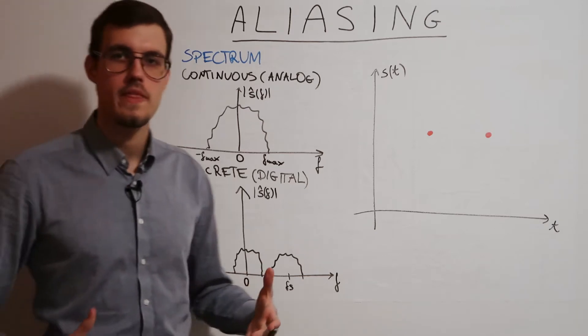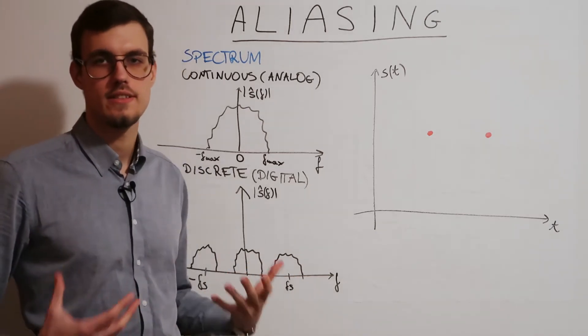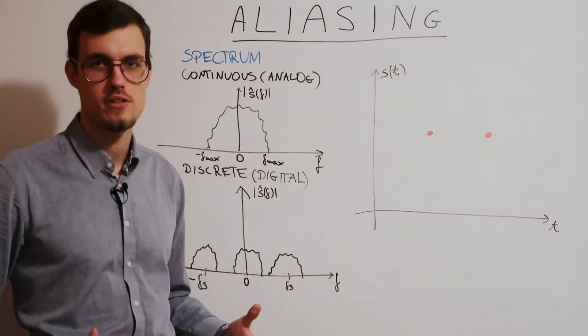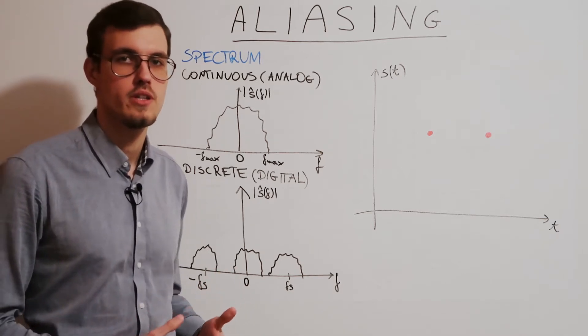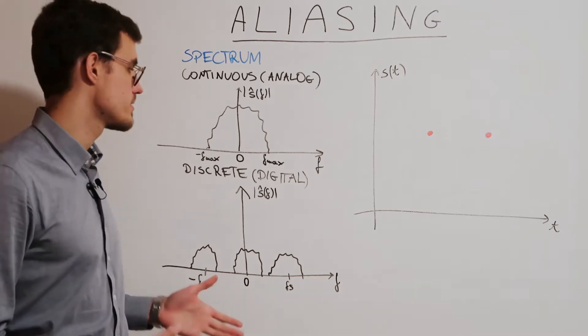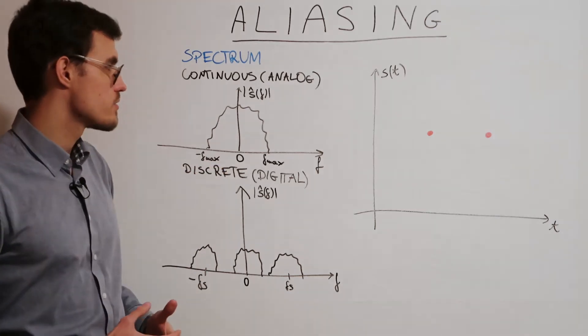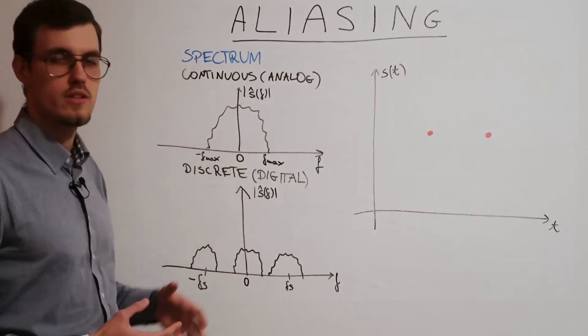If we knew a complete analog signal, so continuous function, and we computed its Fourier transform, we'd receive a continuous spectrum. And it could look somewhat similar to this one.